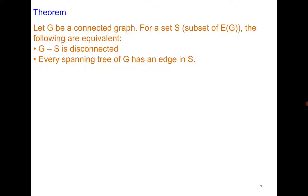Let's move to a result which says: let g be a connected graph, and for a set S which is a subset of the edge set, the following statements are equivalent. Whenever this kind of question comes, we show that one implies two and two implies one. We start with: g minus S is disconnected, and we have to show that every spanning tree of g has an edge in S.